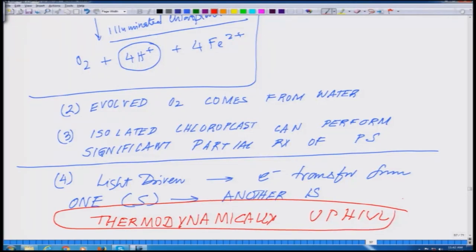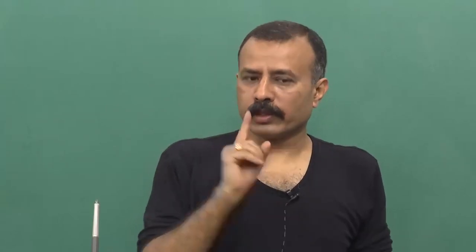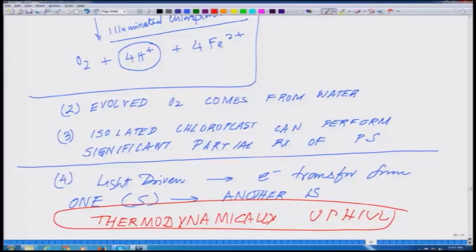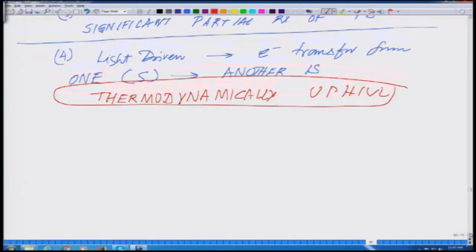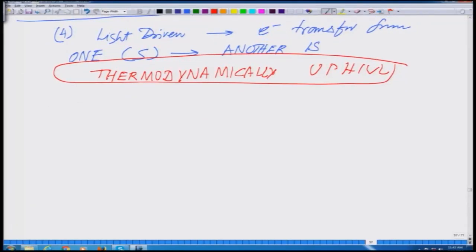The electron transfer is happening not down the gradient but up the gradient, so that needs a lot of energy. It is almost like you are pulling a bucket of water all the way uphill — that is essentially a thermodynamically uphill phenomenon where you have to invest energy to raise the electron to a higher energy state. This is what is very critical about the whole process of photosynthesis, which was very nicely summarized by the Hill reaction.